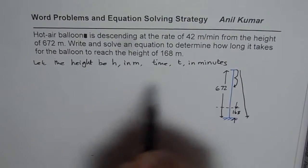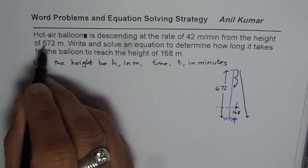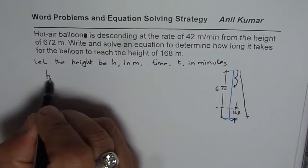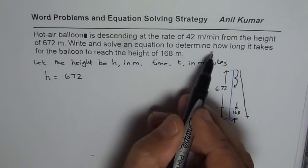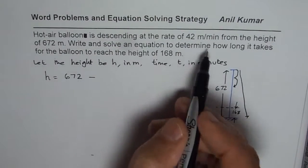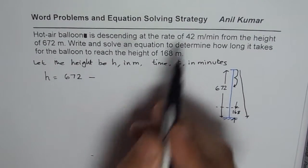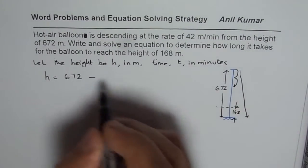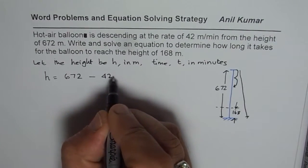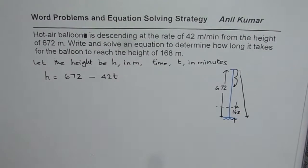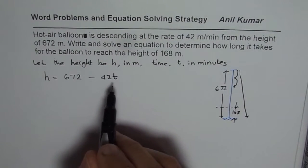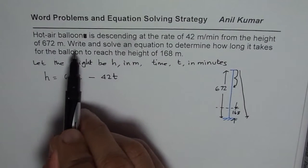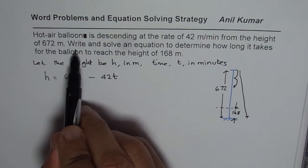Initially, the balloon is at the height of 672, so height equals 672. But it is decreasing at the rate of 42 meters per minute, meaning every minute it decreases by 42. So in T minutes it will decrease by 42 times T. That gives us the equation: H = 672 − 42T. That is how height is related to time in this situation, and that is how we write the equation.